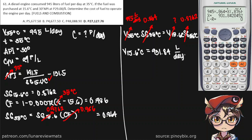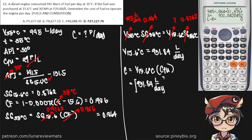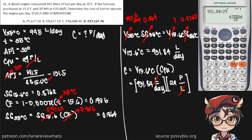We're not done yet — we still need to convert this to pesos per day. By dimensional analysis, we multiply V at 15.6°C by the cost of fuel. Substituting: 931.84 litres per day times 29 pesos per litre — the litres cancel out — giving us a final answer of 27,023 pesos per day. The closest choice is choice D.